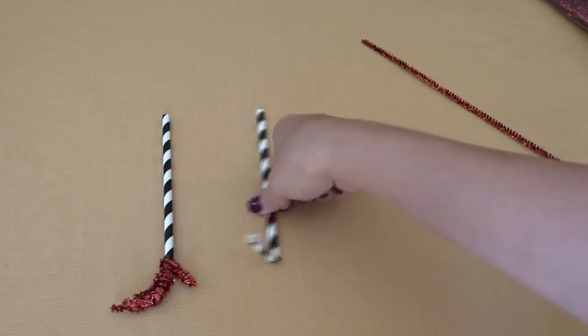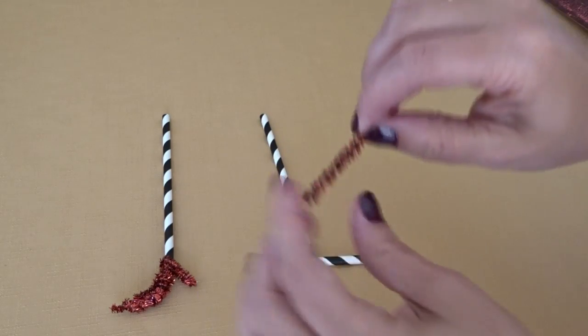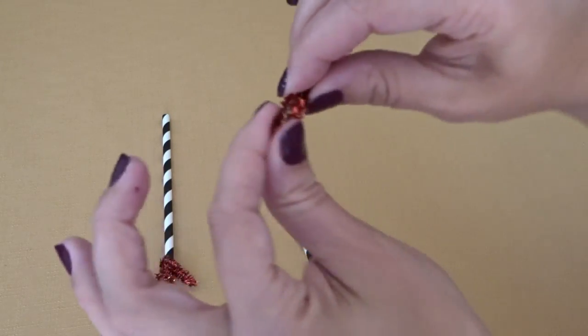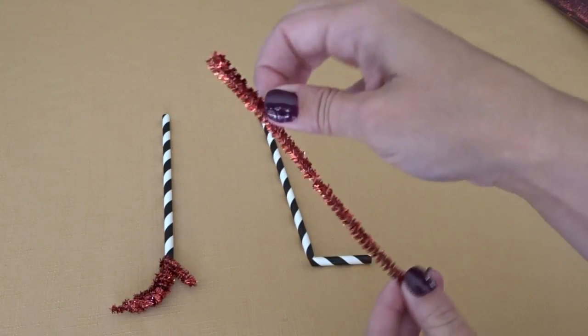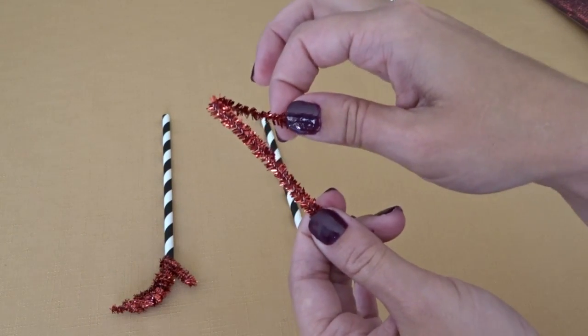This is what the finished product is going to look like. You'll take your pipe cleaner, bend a small portion of it in half to form her heel, about half an inch or so, depending on how high you want the heels to be.